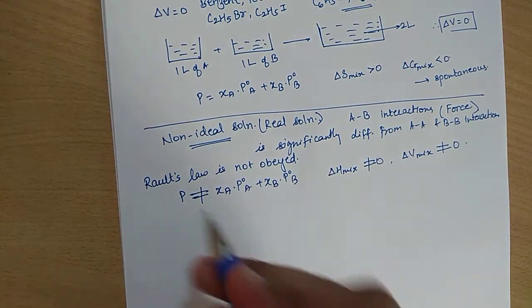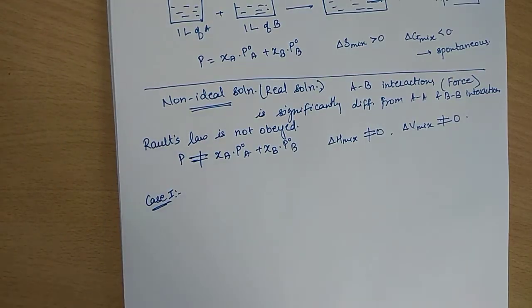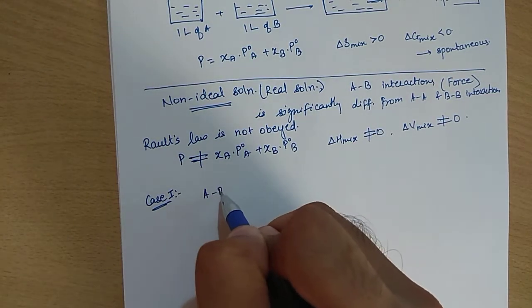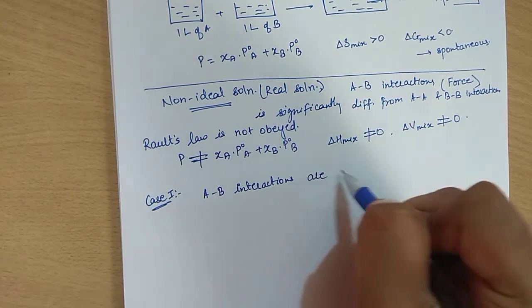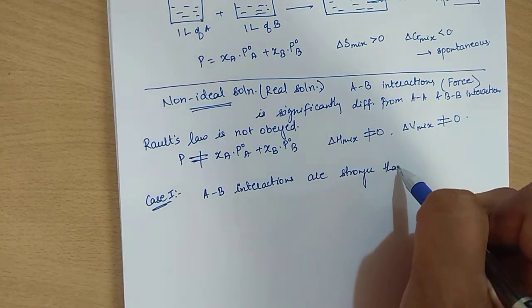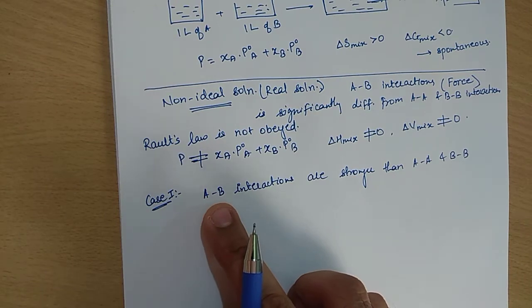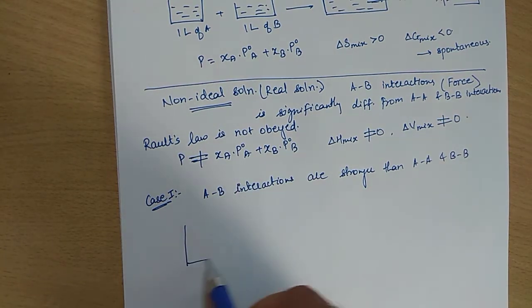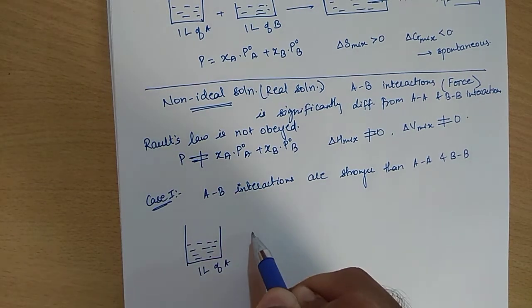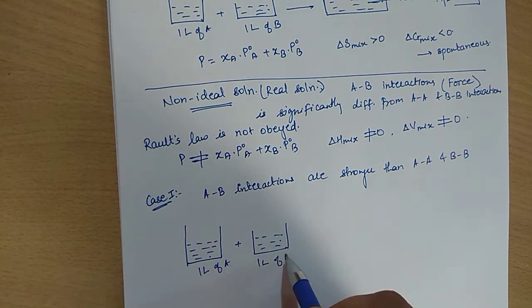Case 1: when A-B interactions are stronger than A-A and B-B interactions — meaning the force of attraction between A and B is much greater. If you mix 1 liter of A with 1 liter of B, because A and B attract each other strongly, molecules come closer together and do not occupy the full volume. So the actual volume occupied is less than 2 liters, meaning delta V of mixing is negative.